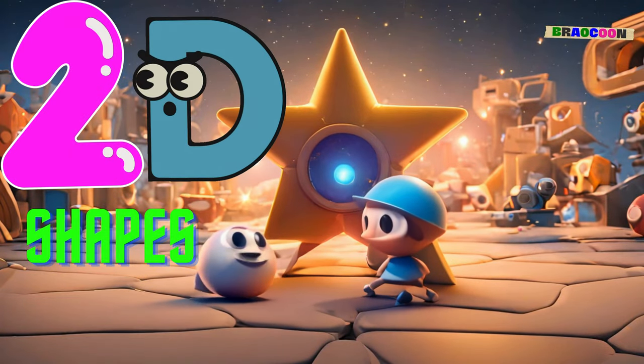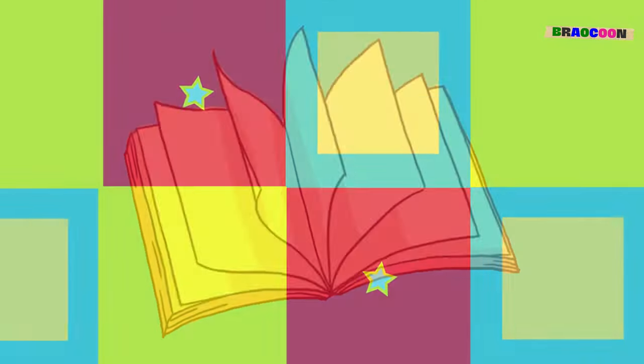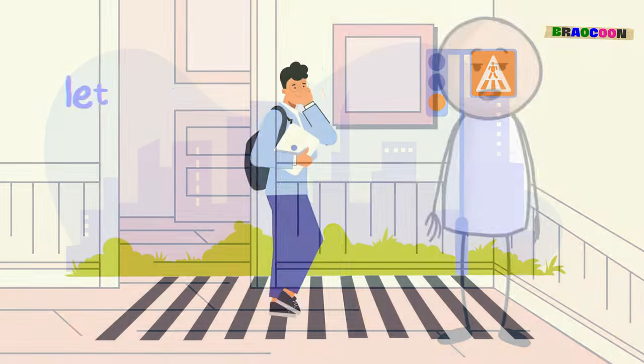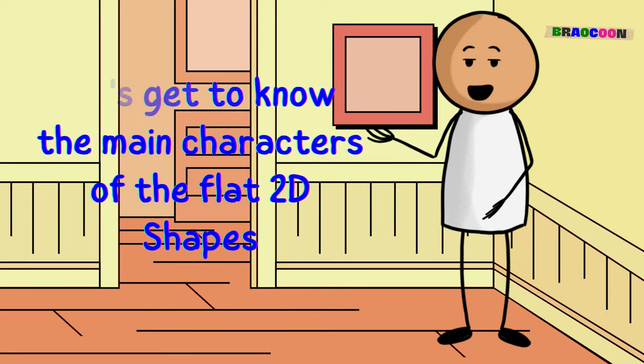They're the outlines and patterns we see everywhere, from storybook pages to signs on the street. Let's get to know the main characters of the flat 2D shapes.